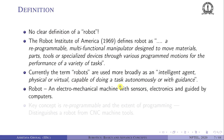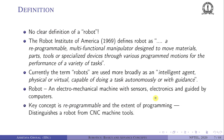For our purposes, a robot is an electromechanical machine with sensors, electronics, and guided by computers. The key concept that remains valid is that a robot is reprogrammable — it can do a variety of tasks, making it much more flexible than a CNC machine tool. A robot can do painting, welding, material handling, and so on. This word 'reprogrammable' is still very important.